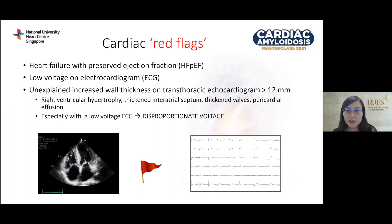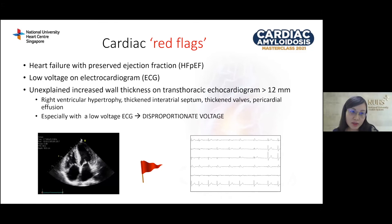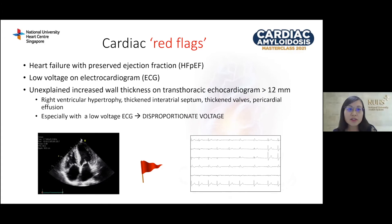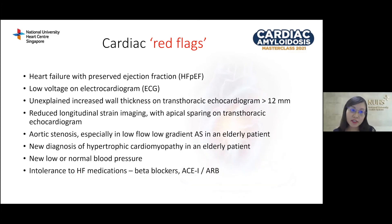On transthoracic echocardiogram, unexplained increased wall thickness of more than 12 mm — especially without a prior history of hypertension — combined with heart failure and low voltage on ECG should raise high suspicion for cardiac amyloidosis. Other echocardiographic findings include right ventricular hypertrophy, thickened interatrial septum, thickened valves, and small pericardial effusion. Reduced longitudinal strain imaging with apical sparing — typically described as the 'cherry on top' pattern — is another important red flag.